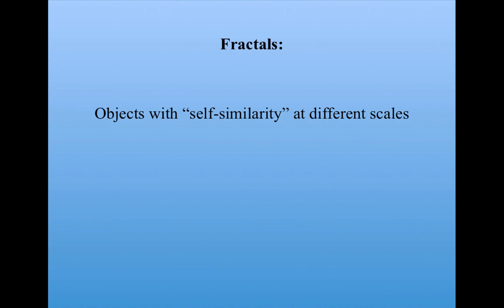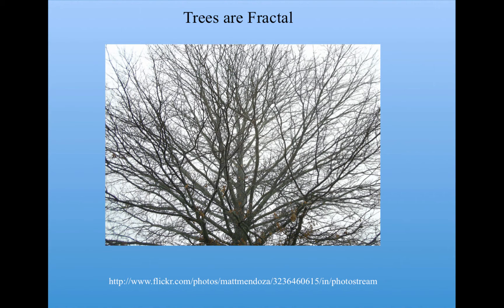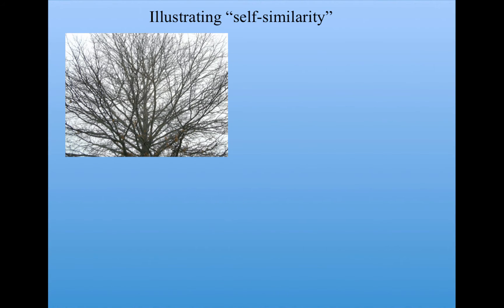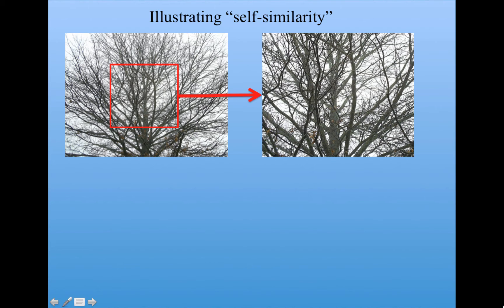Fractals can be intuitively defined as objects with self-similarity at different scales. It's striking how many natural objects there are with this kind of property. Let's look at a simple example: trees. Trees are fractal, and let me explain the notion of self-similarity. Let's take a picture of a tree. Now we'll take part of that picture and crop it out and blow it up. You can see that the structure of this blown-up part of the picture is very similar to the structure of the whole picture itself.